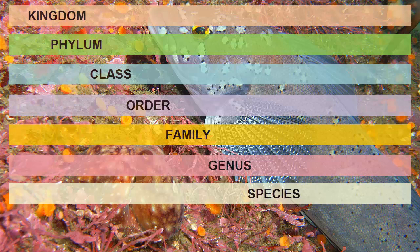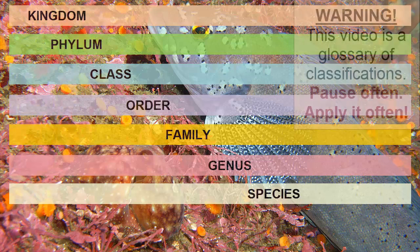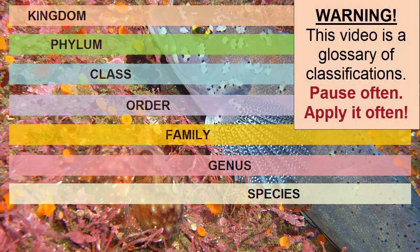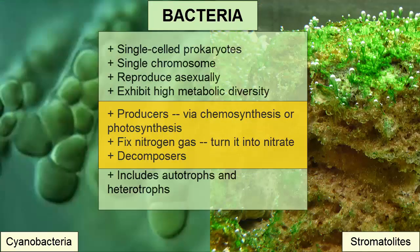In the oceans, this video tutorial is a glossary of common marine organism taxonomic classifications. Pause often to digest the information and apply it regularly to help it sink in. The Bacteria kingdom includes single-celled prokaryotes with a single chromosome.